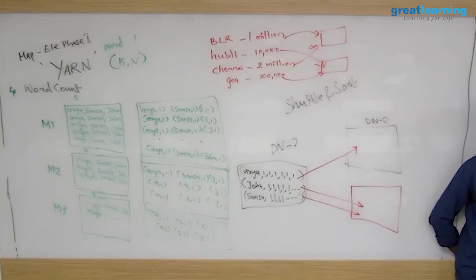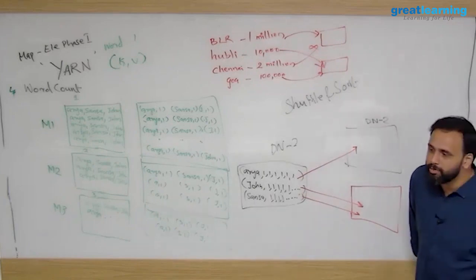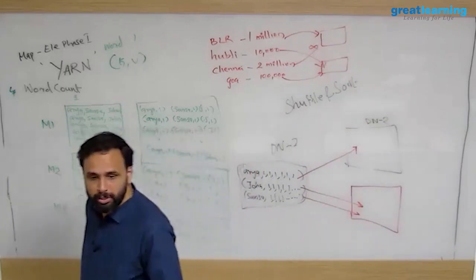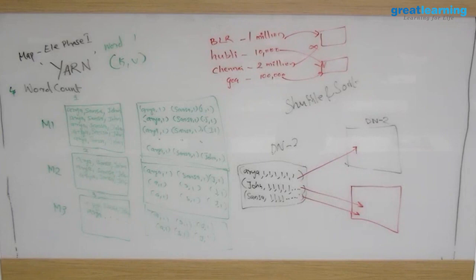Hard disks on data nodes are at least 60 terabytes-plus capacity. We had a use case with two billion values, which came to about two terabytes — easily accommodatable. Two billion values totaling around two terabytes of data was a real use case we encountered.